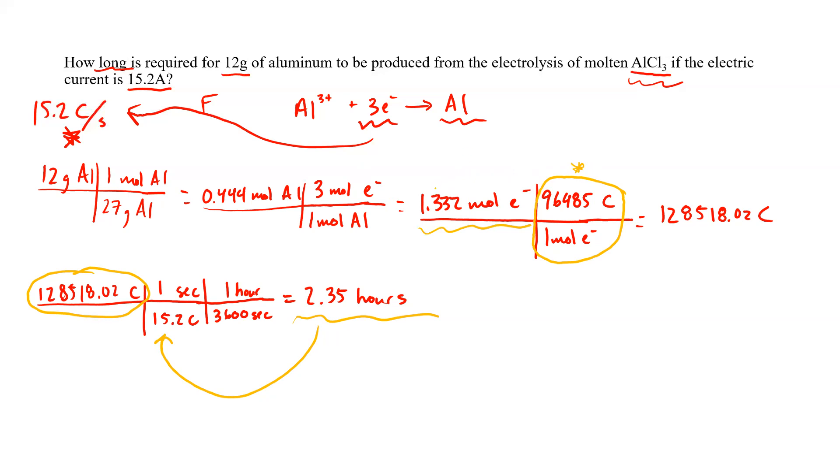That is going to lead to the production or the reduction of 0.444 moles of aluminum. 0.444 moles of aluminum is the same as 12 grams of aluminum.